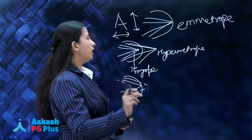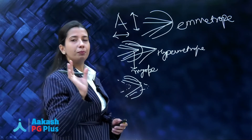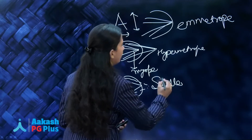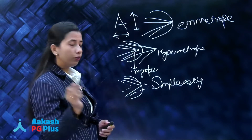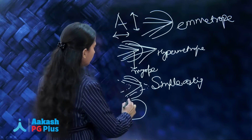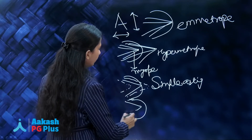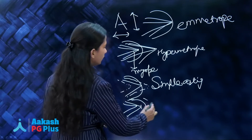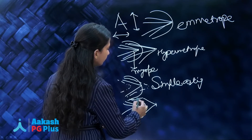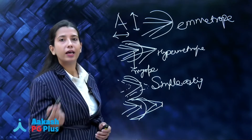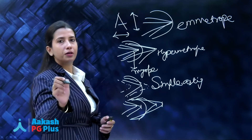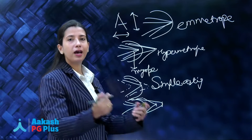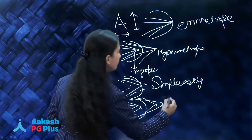In simple astigmatism, you will have only a cylinder at a particular axis, with no spherical correction. Another scenario is that both the rays are focusing in front of the retina but at different foci, or both the rays are focusing behind the retina but at different foci — that is compound astigmatism, meaning both are focusing either in front or both behind, but the foci are different.